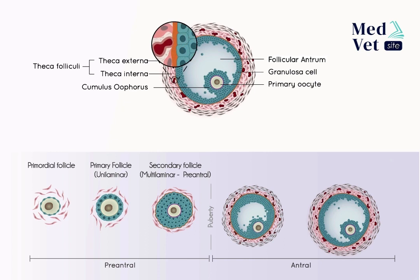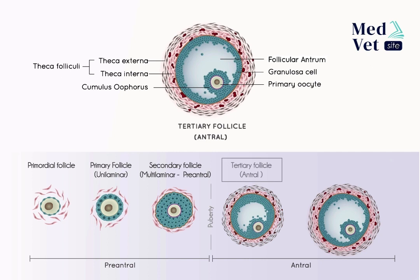Both theca layers also contain lymphatic vessels and nerve endings. However, the blood vessels of the theca do not pass through the basal lamina surrounding the granulosa cells; therefore, the granulosa cells and oocyte receive nutrients from the blood by diffusion through the basal lamina, as the environment of the stratum granulosum is avascular. In this state, the follicle is called a tertiary follicle.